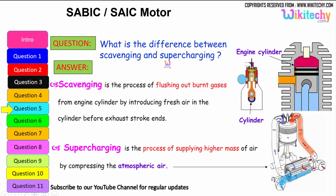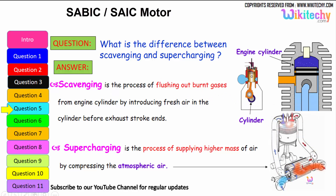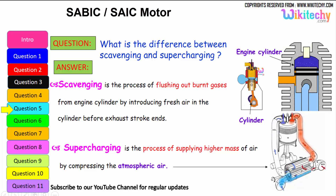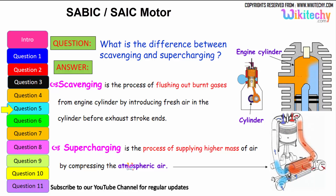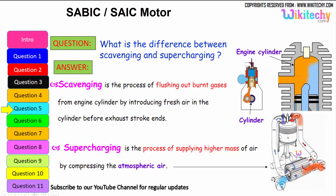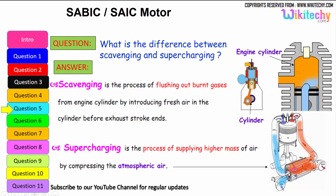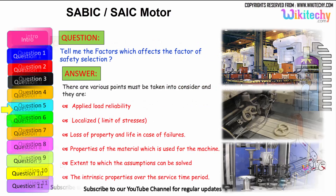What is the difference between scavenging and supercharging? Scavenging is the process of flushing out the burnt gases from the engine cylinder by introducing fresh air in the cylinder before the exhaust stroke ends. Supercharging, on the other hand, is the process of supplying high-density masses of air by compressing it above atmospheric pressure, so that high pressure air is injected into the cylinder.